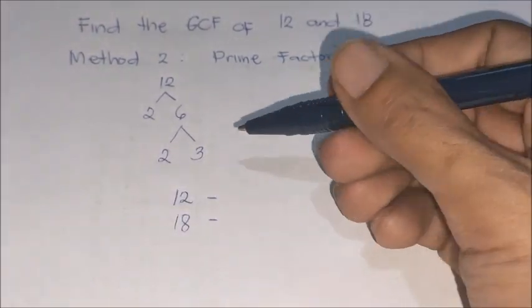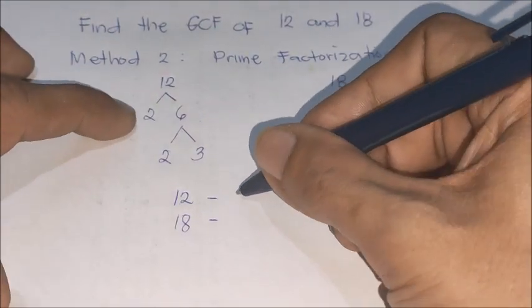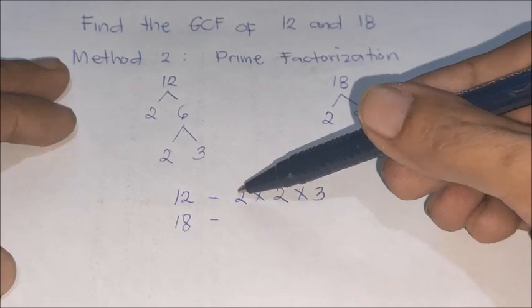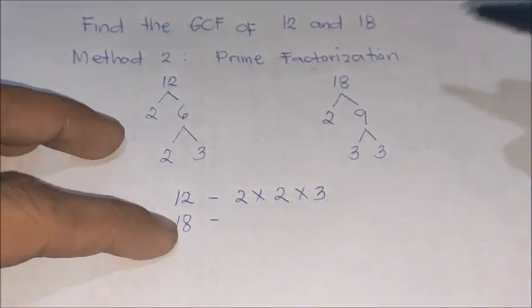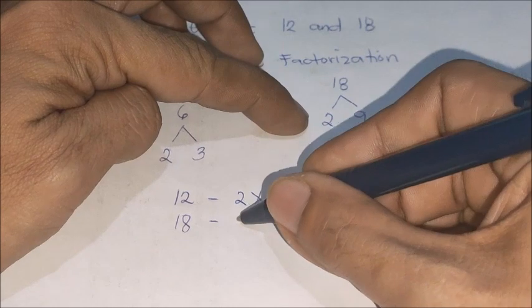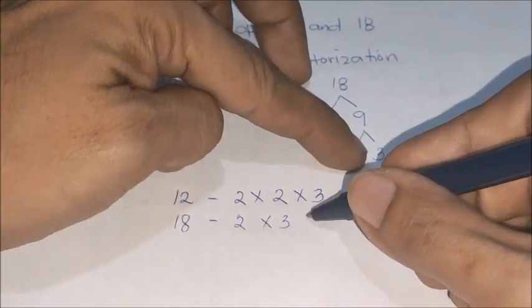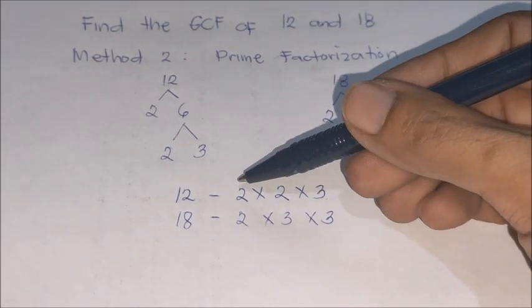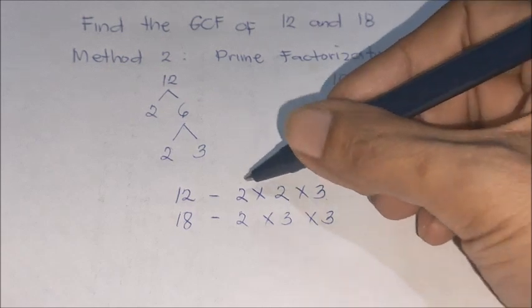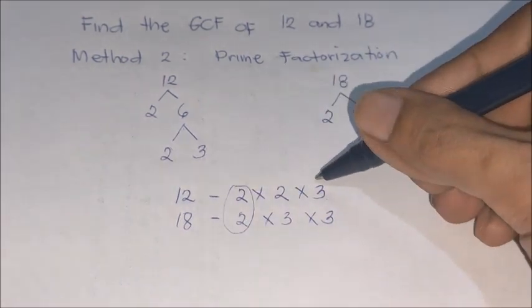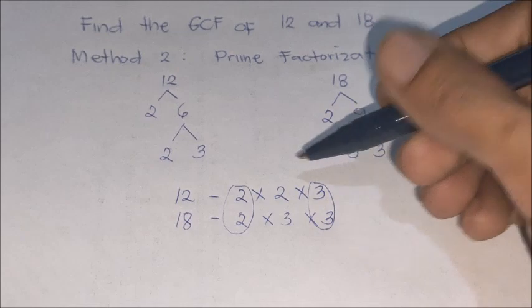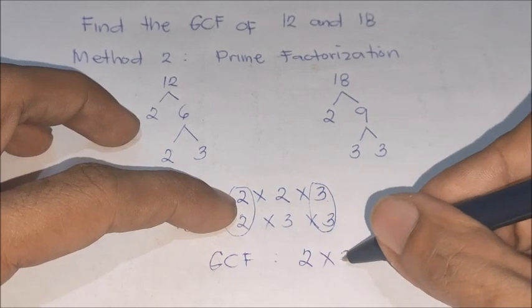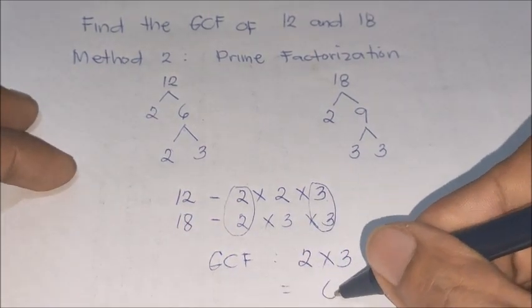Now we list the prime factors for 12 and 18. For 12, it's 2 times 2 times 3. When we multiply 2 times 2 times 3, the answer is 12. For 18, it's 2 times 3 times 3. After that, we find what's common between 12 and 18 that can be partnered. They both have 2 and 3. So, the GCF is 2 times 3, which equals 6.